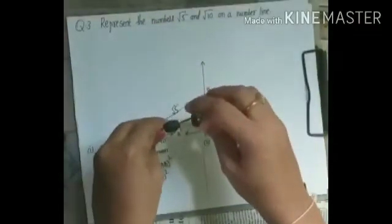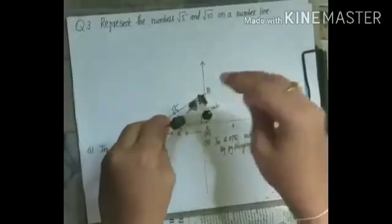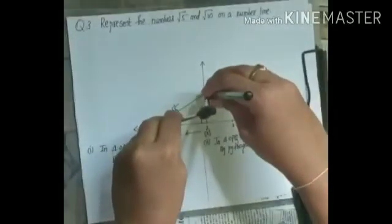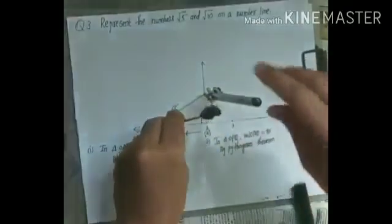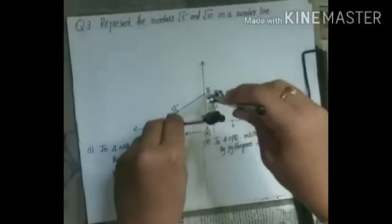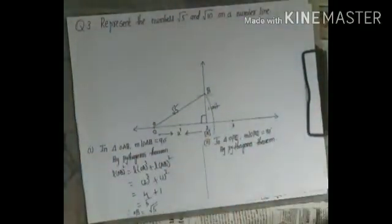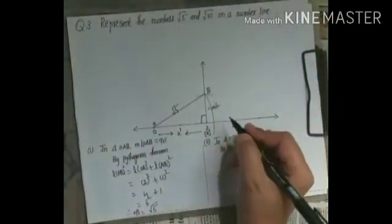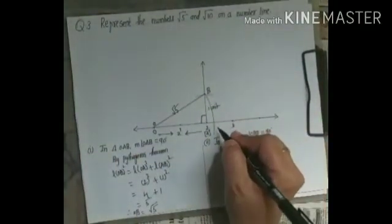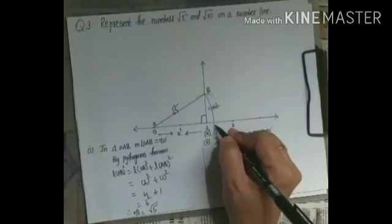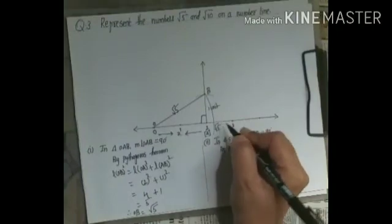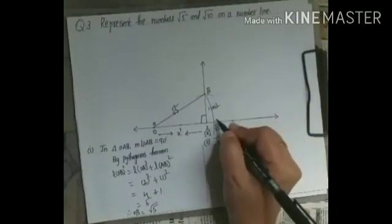Take the compass, keep it on O, and place the pencil on B. Draw an arc that cuts the number line. This arc marks the point √5 on the number line; give it the name S.